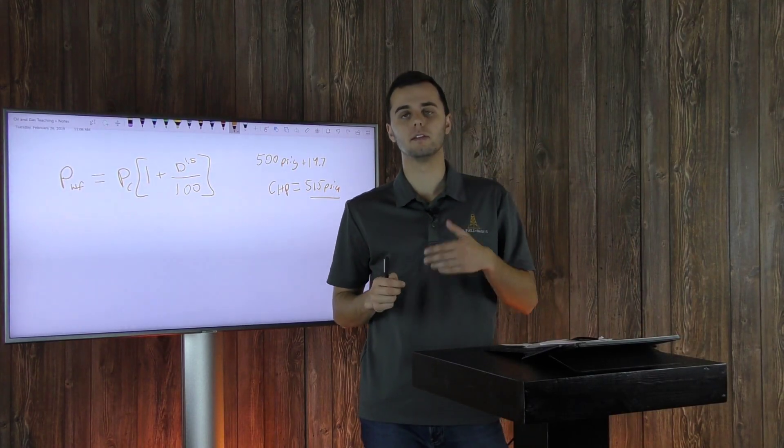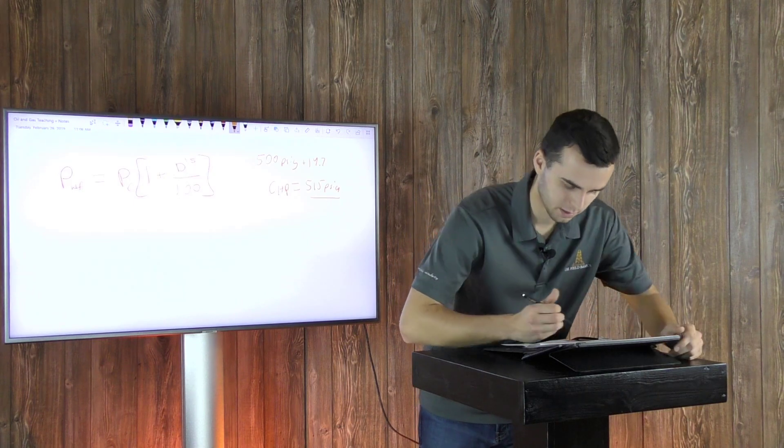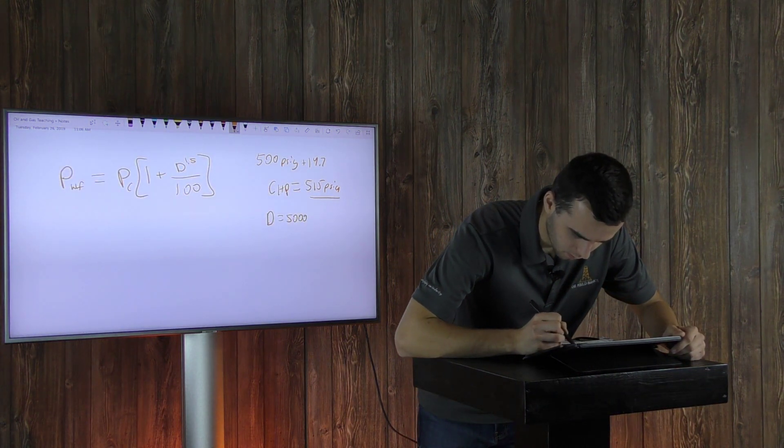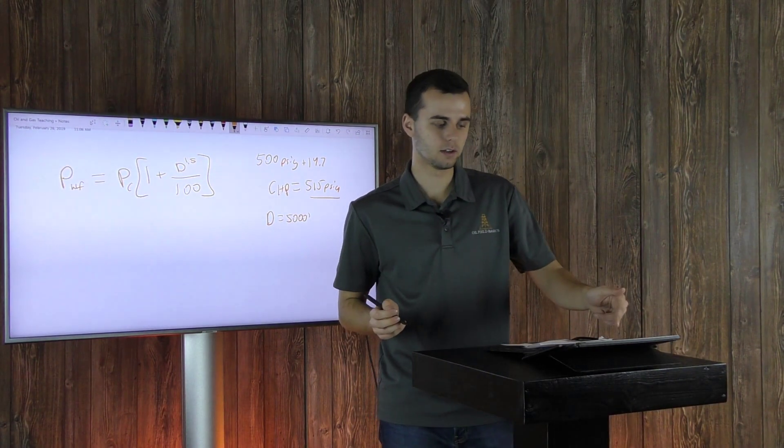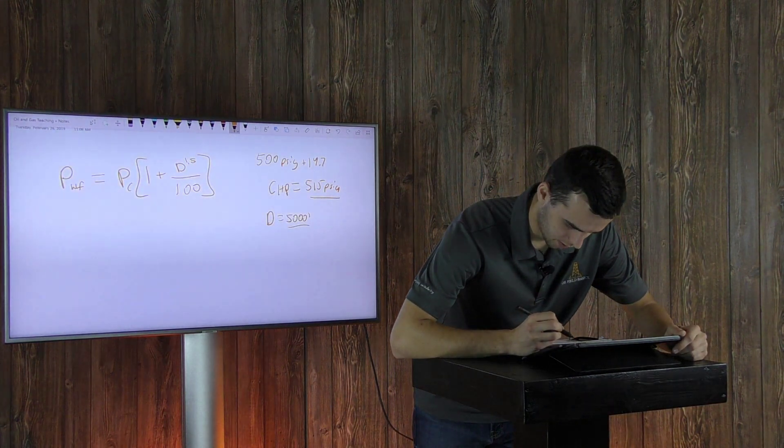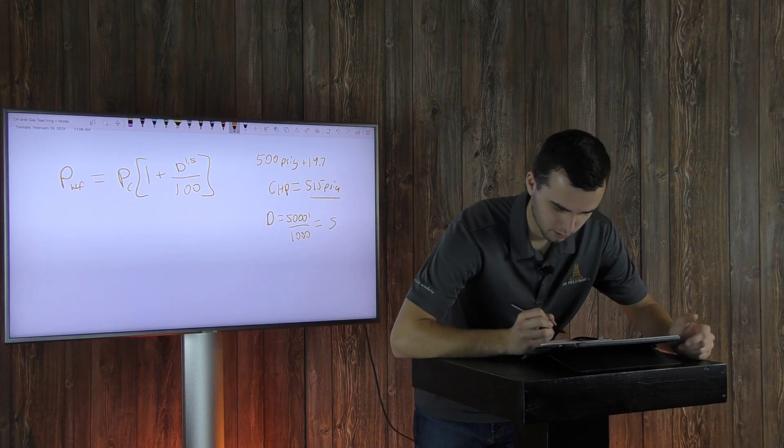Next you want to find the depth of your well. Let's say it's 5,000 feet. What you'll want to do to calculate your D in the equation, you want to divide that by a thousand. So in this case it will equal 5.